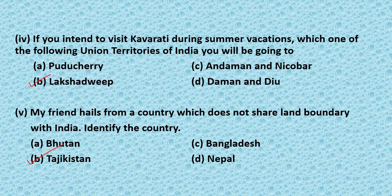Question 5: My friend hails from a country which does not share a land boundary with India. Identify the country — Option A: Bhutan, Option B: Tajikistan, Option C: Bangladesh, Option D: Nepal. Answer: Option B, Tajikistan.